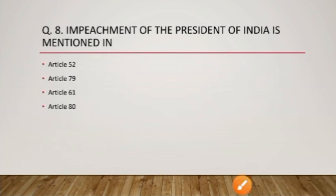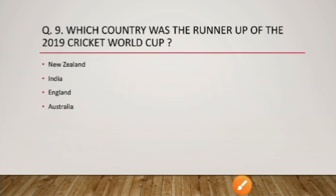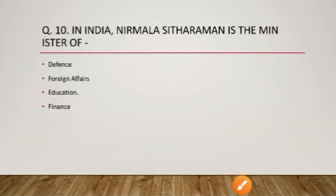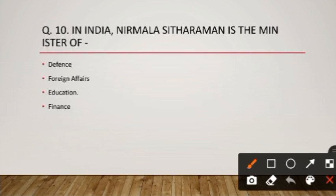Question number nine: which country was the runner-up of the 2019 Cricket World Cup? We all know the 2019 Cricket World Cup winner was England. The runner-up team was New Zealand, whose captain was Ken Williamson.